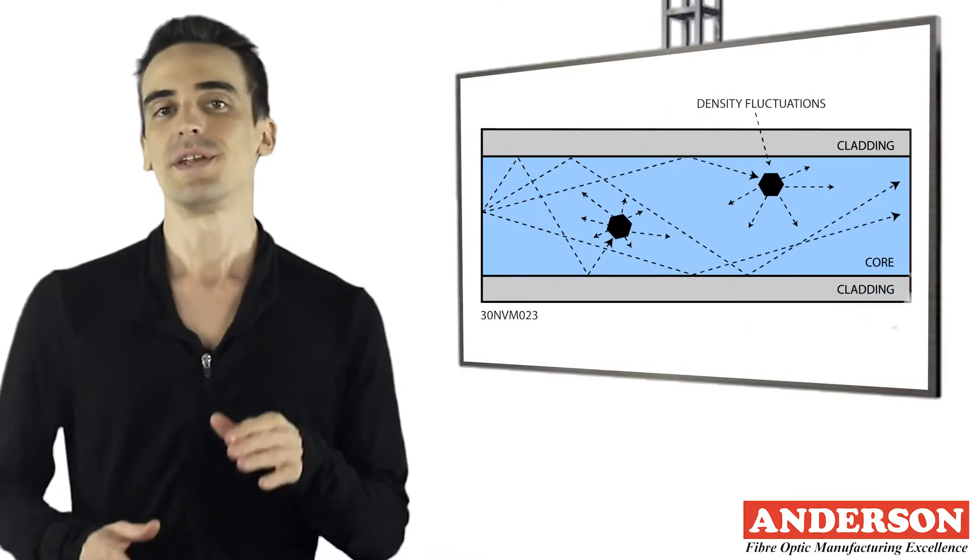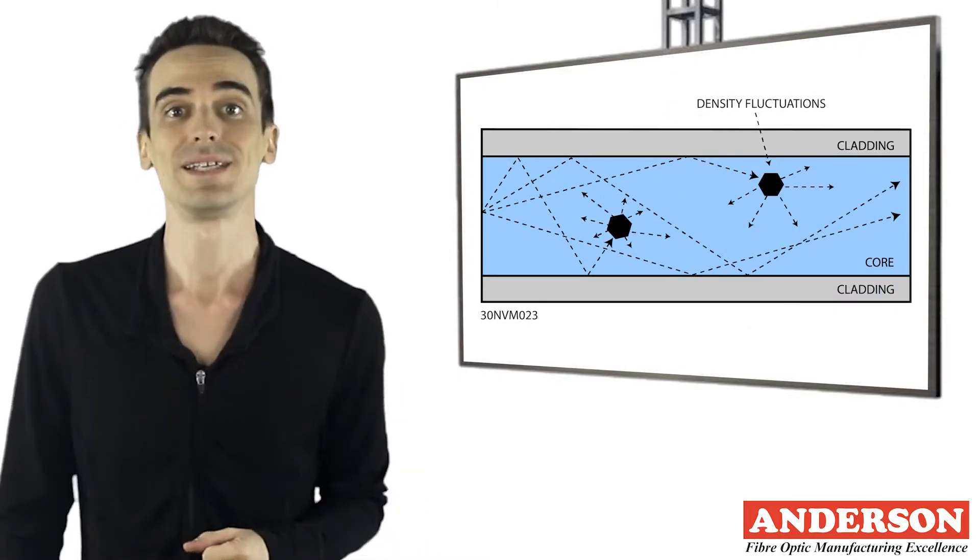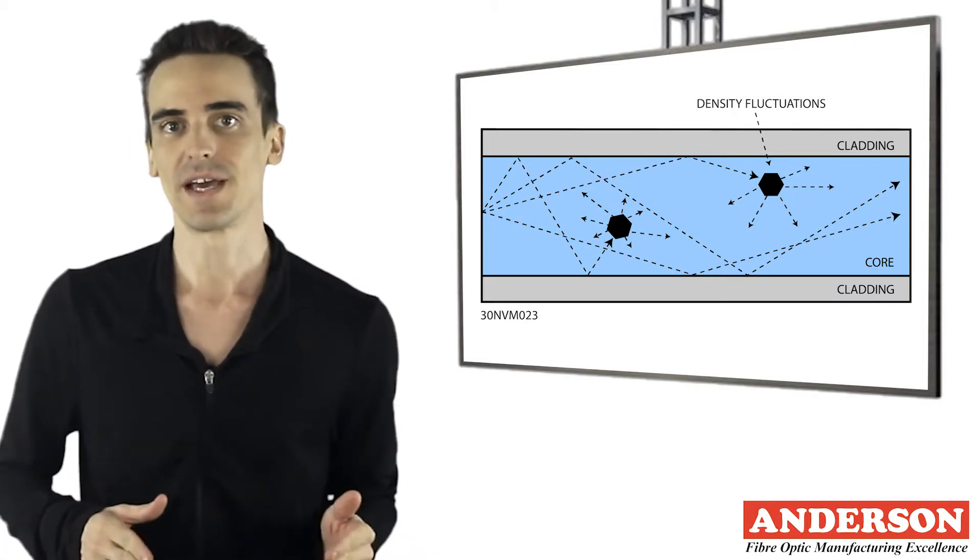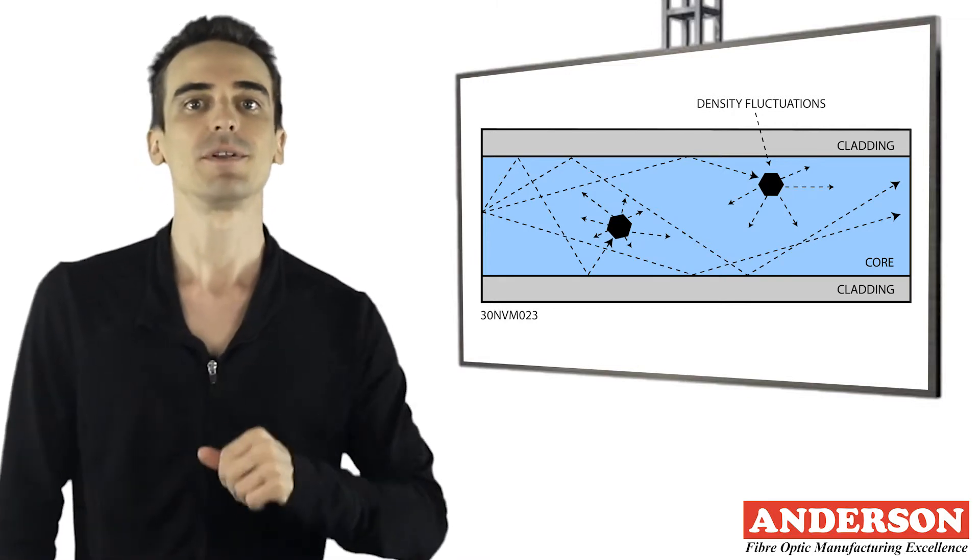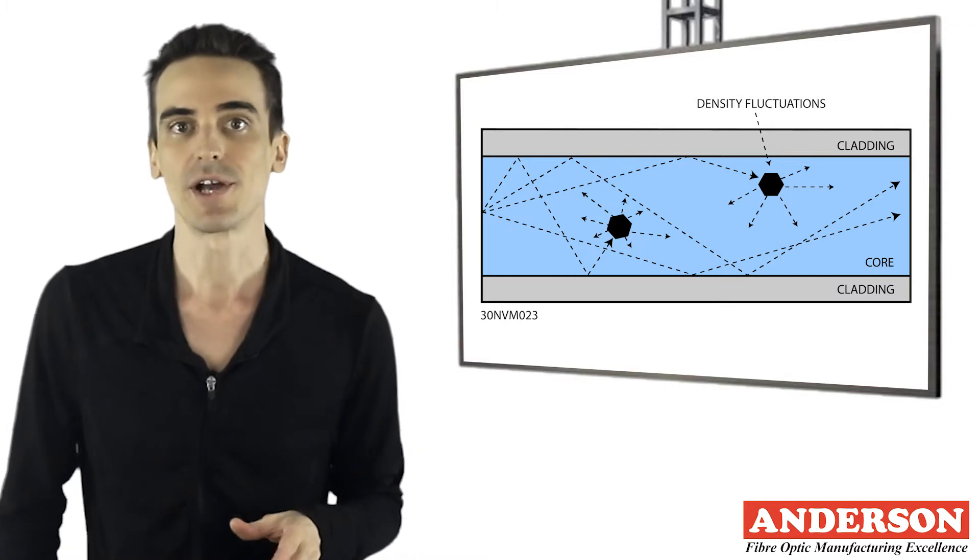Within nonlinear scattering, there are two derivatives: stimulated Brillouin scattering, caused by the compression of the medium which then changes the refractive index of the material; and stimulated Raman scattering.